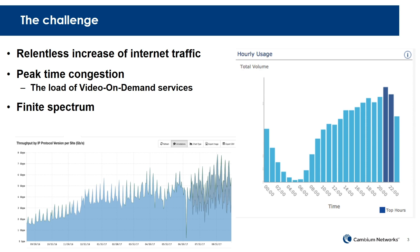The sustained increase in internet traffic volume is a challenge for many service providers. In the plot on the bottom of this slide, you can see the data throughput at a site over a one-year period. This data was provided by one of our customers, and it shows an increase of around three times over this time. This type of increase is not unusual. Furthermore, for residential service providers, the traffic shows a significant variation through the day, as shown in the bar graph on the right, where we can see the traffic peaking around 9pm.